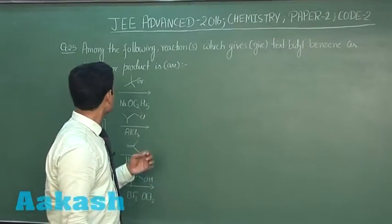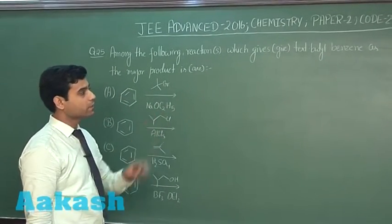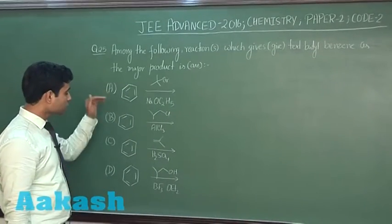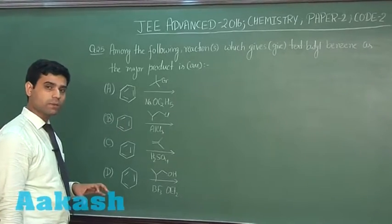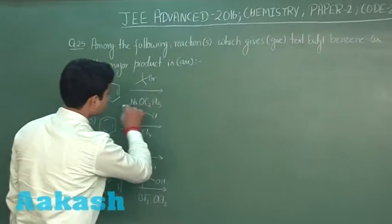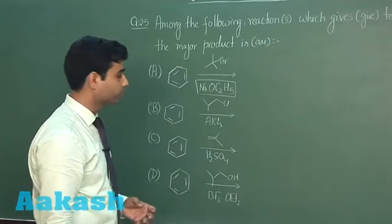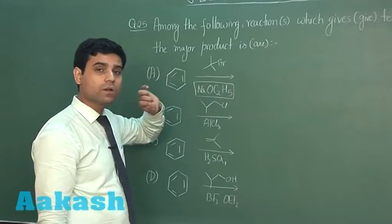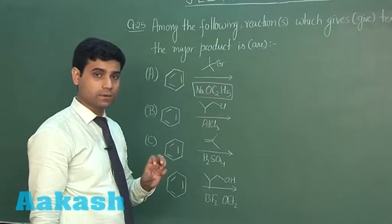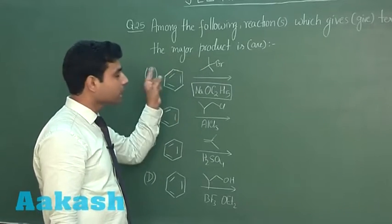The next question asks which of the following reactions gives tertiary butyl benzene as the major product. In the first case, we have NaOC2H5, which is a strongly basic medium. In a strongly basic medium, elimination of tertiary butyl bromide will take place — there is no formation of carbocation, and hence no electrophilic attack will take place.